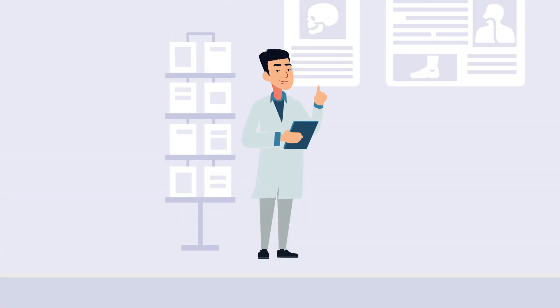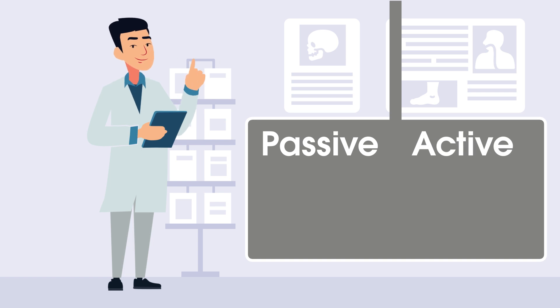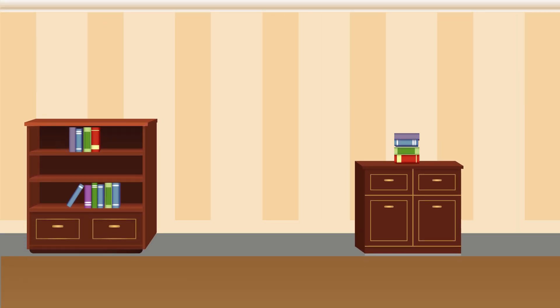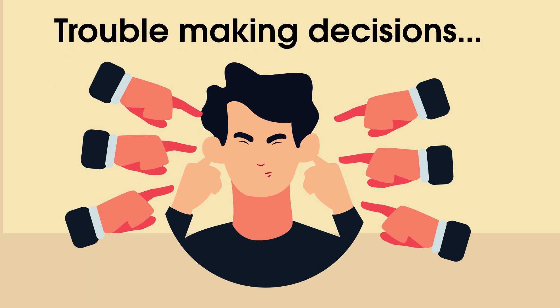Some researchers classify procrastination in two main types, passive and active procrastinators. Passive procrastinators delay the task because they have trouble making decisions and acting on them.